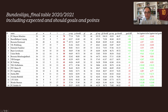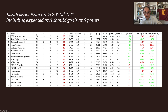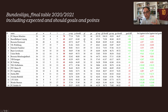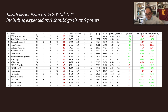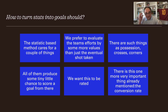Also for Leipzig — this shows my should-goals calculated with my approach. Leipzig were expected to score 67 goals, should have had 72, but scored only 60. They were expected to concede 40 and indeed conceded 40. Comparing all the values, the results come pretty close.